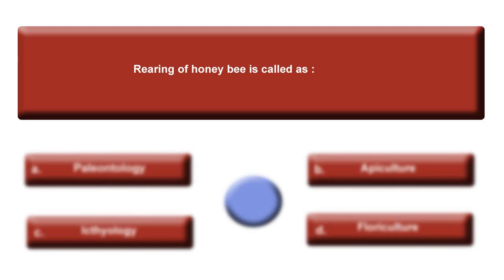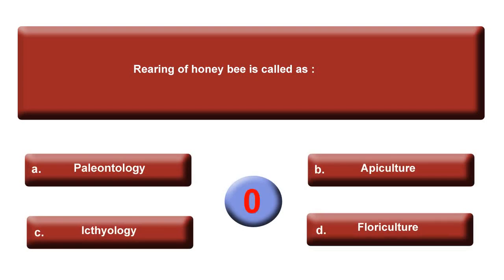Next question: Rearing of honeybees is called — Option A: Paleontology. Option B: Apiculture. Option C: Etiology. Option D: Floriculture. Your time is up. The answer is B, Apiculture.